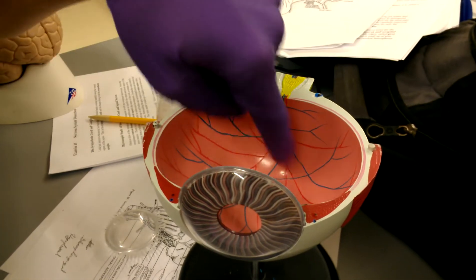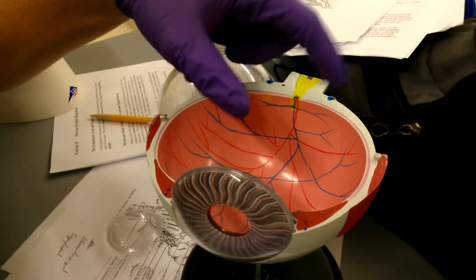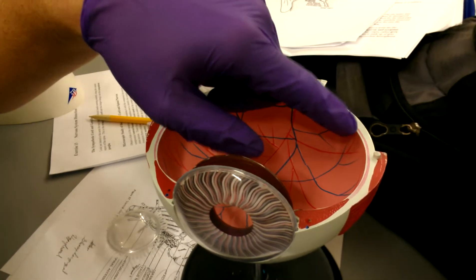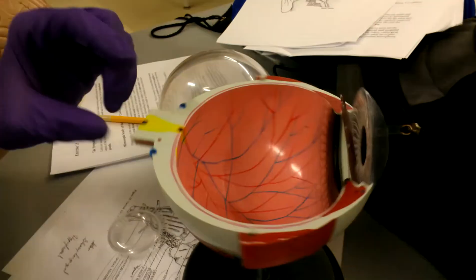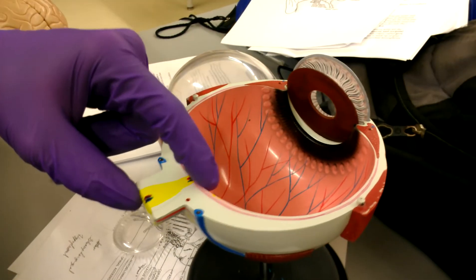The red part in here is the retina and the small line between the sclera and the retina is the choroid. The yellow part here is the optic nerve. And somewhere around here is going to be the optic disc.